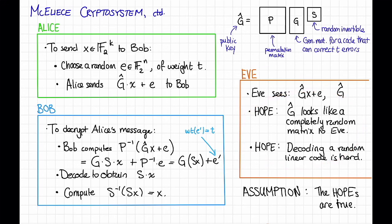This assumption is called the McEliece assumption, at least when this matrix G here is the generator matrix for a binary Goppa code.